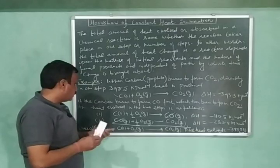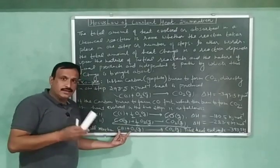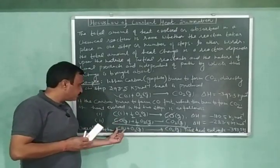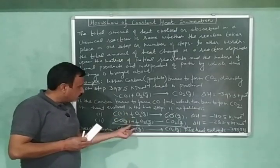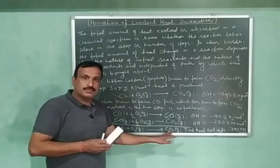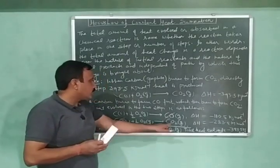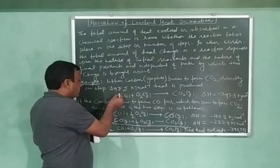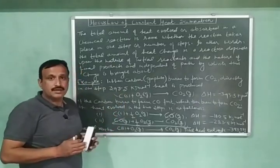So on the reactant side or on the left hand side, we will have carbon, one mole of carbon and one mole of oxygen after addition. And on the right hand side or the product side, we are left with carbon dioxide. So the overall reaction is same.